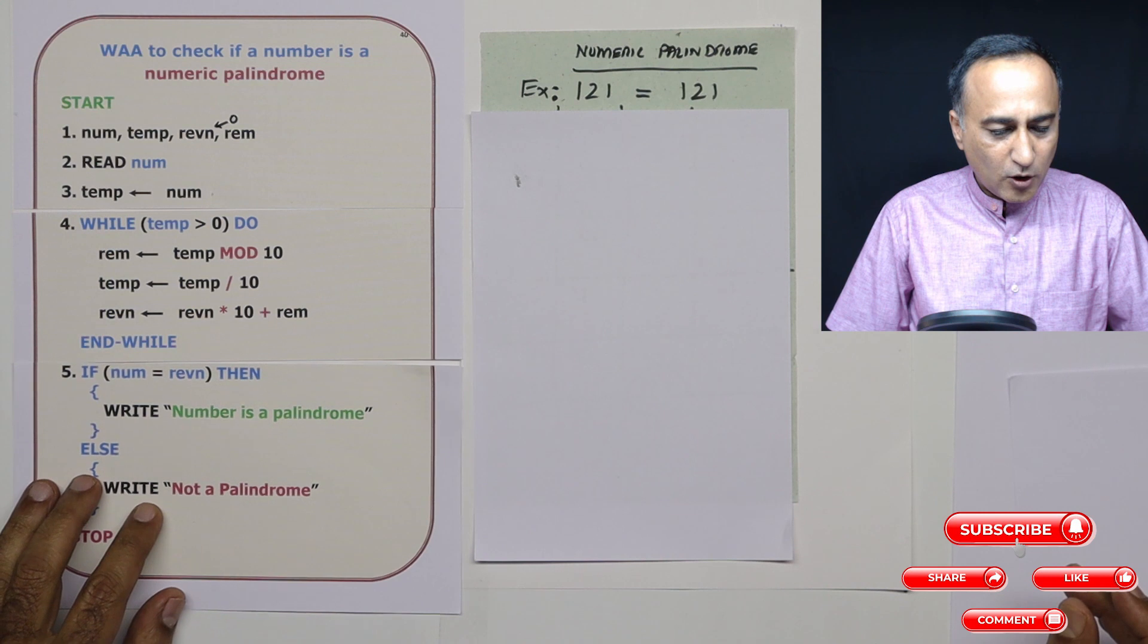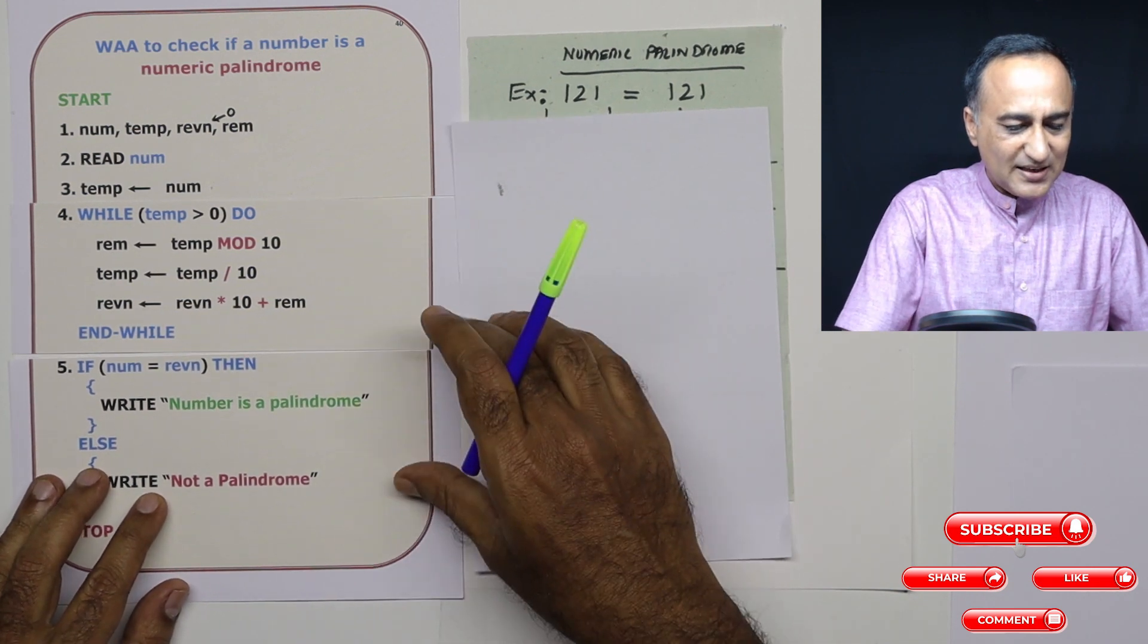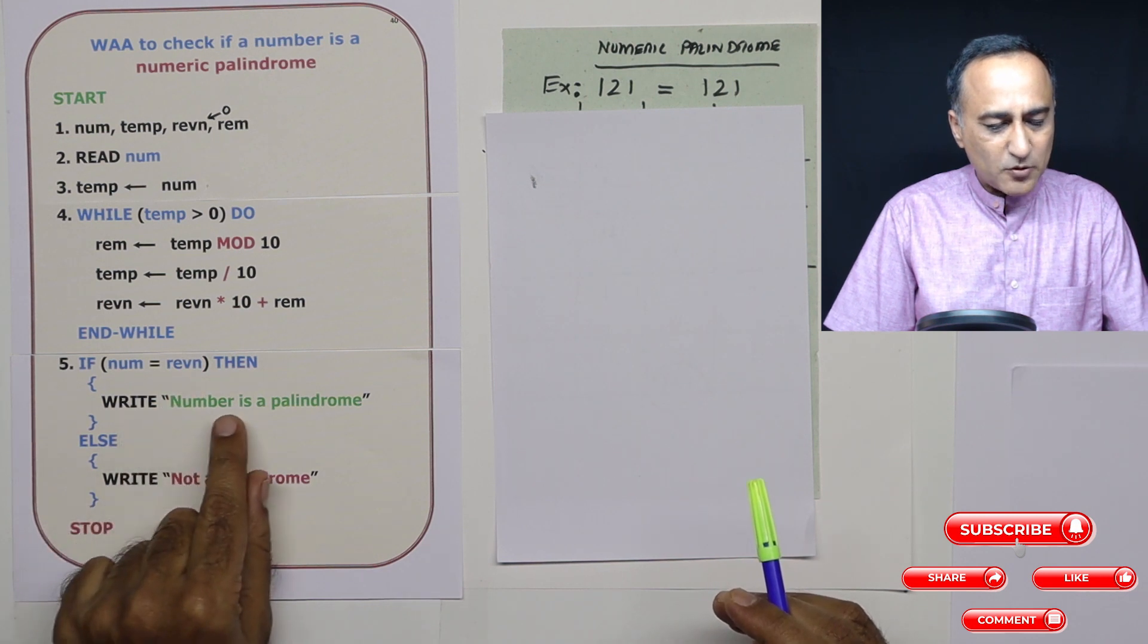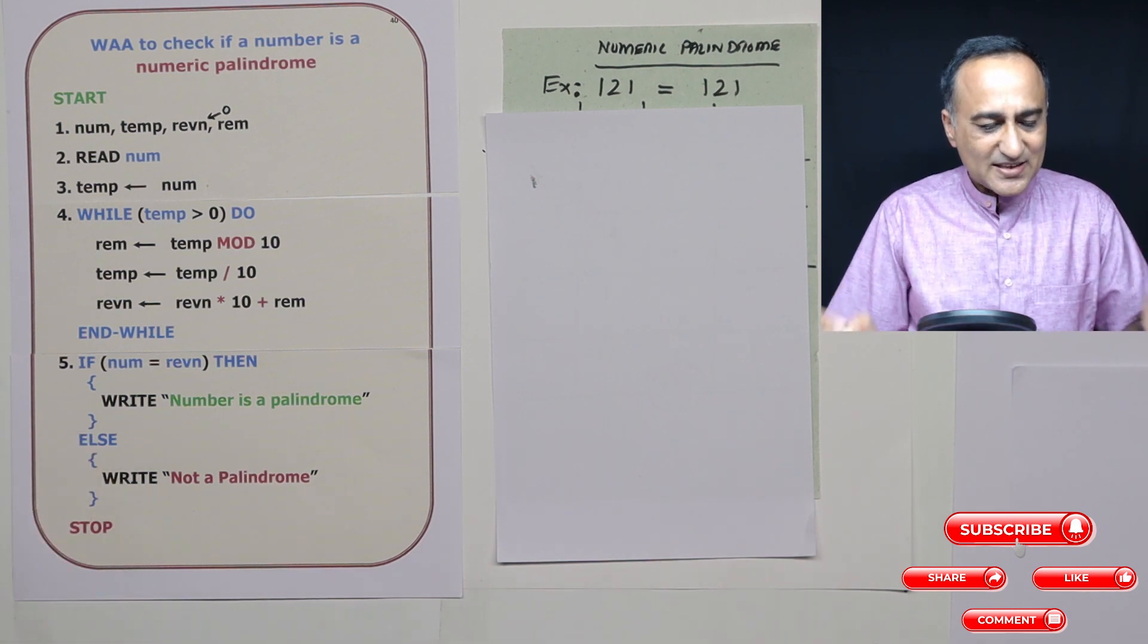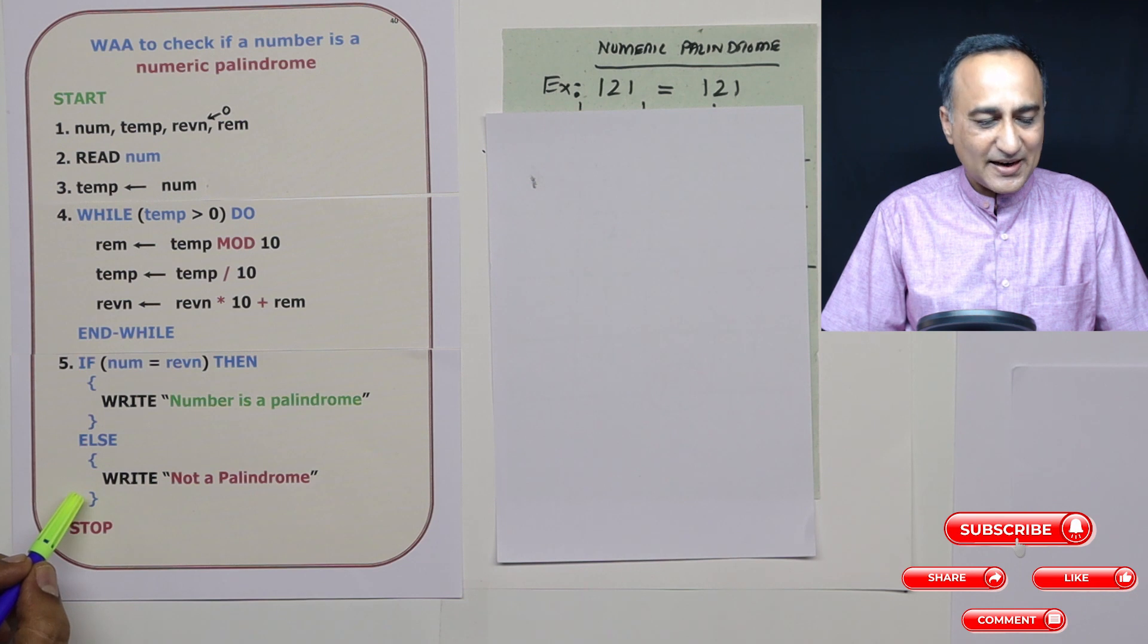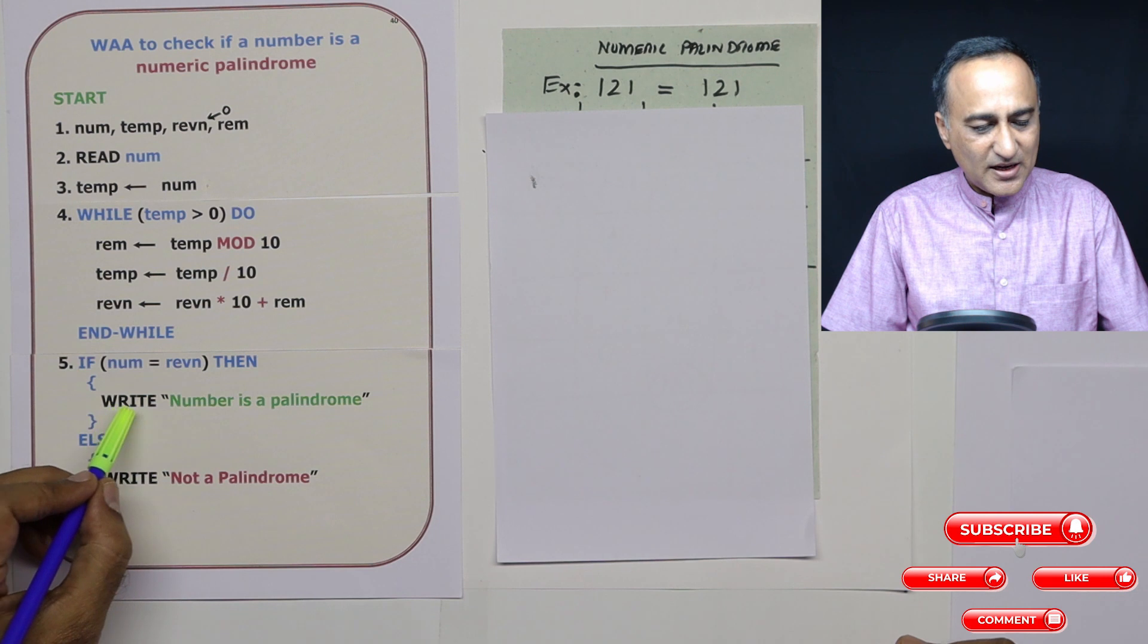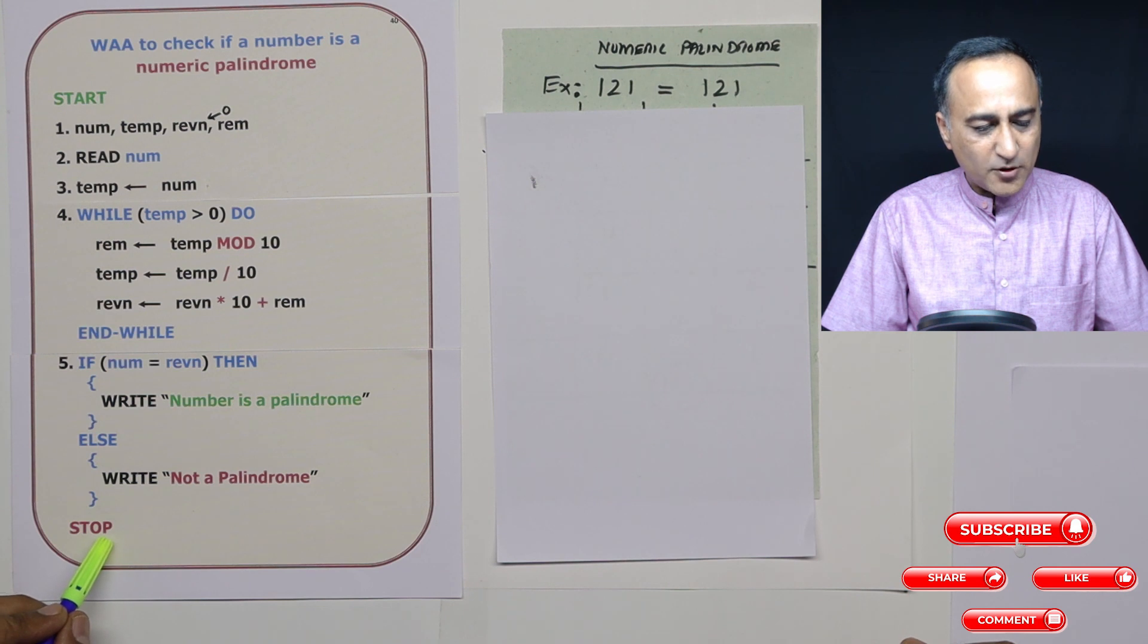All I'm going to do here is ask a question: is the original number equal to reverse of this number? If it is, then I'm going to say number is a palindrome. Else, I'm going to say number is not a palindrome. In this if and else, I've borrowed these curly braces from C. So if-then is the standard algorithm we've been using, but instead of begin and end, I've used curly braces. So the 'is a palindrome' statement belongs to if, 'not a palindrome' belongs to else, and then I'm finally going to stop.